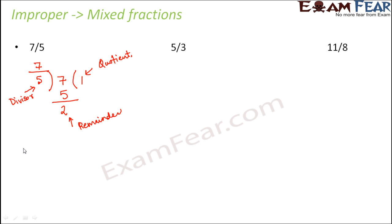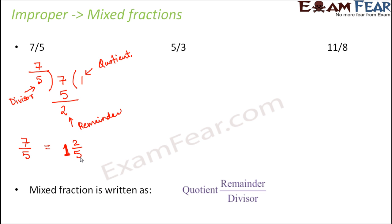Once you divide, in order to convert this 7 by 5 improper fraction into a mixed fraction, you write it as 1 and 2 by 5. That is: 1 is the quotient, which represents the whole number part, and then the remainder divided by the divisor gives you the fractional part. So the simple concept is: quotient is the whole number part, and remainder by divisor is the fractional part.